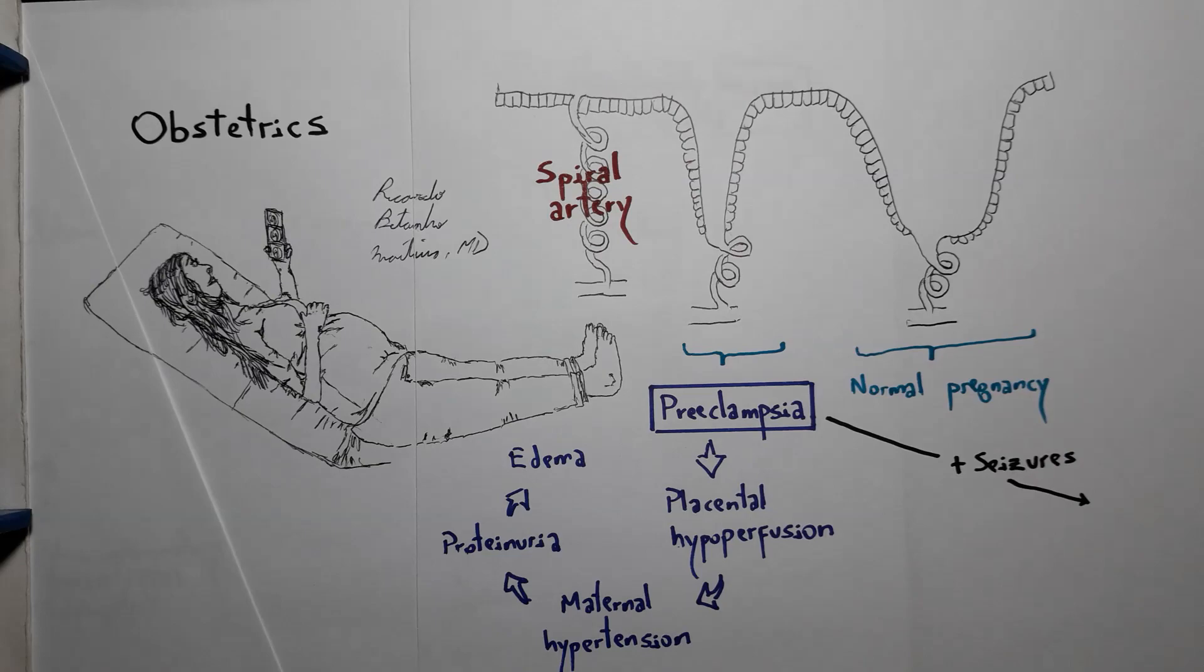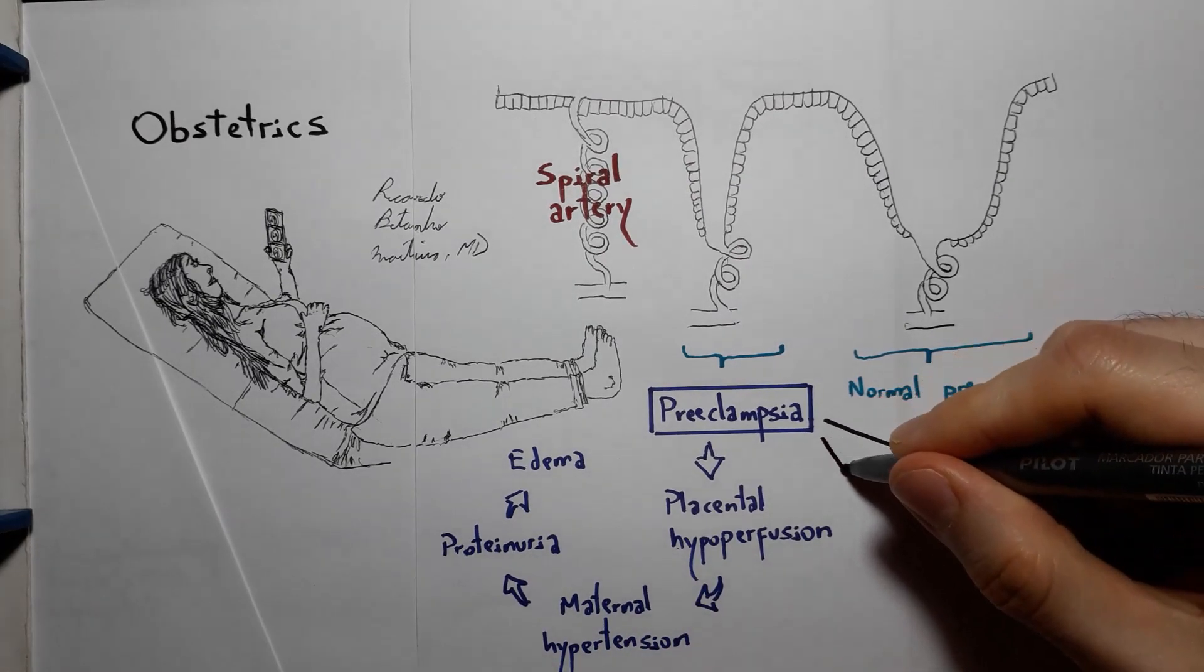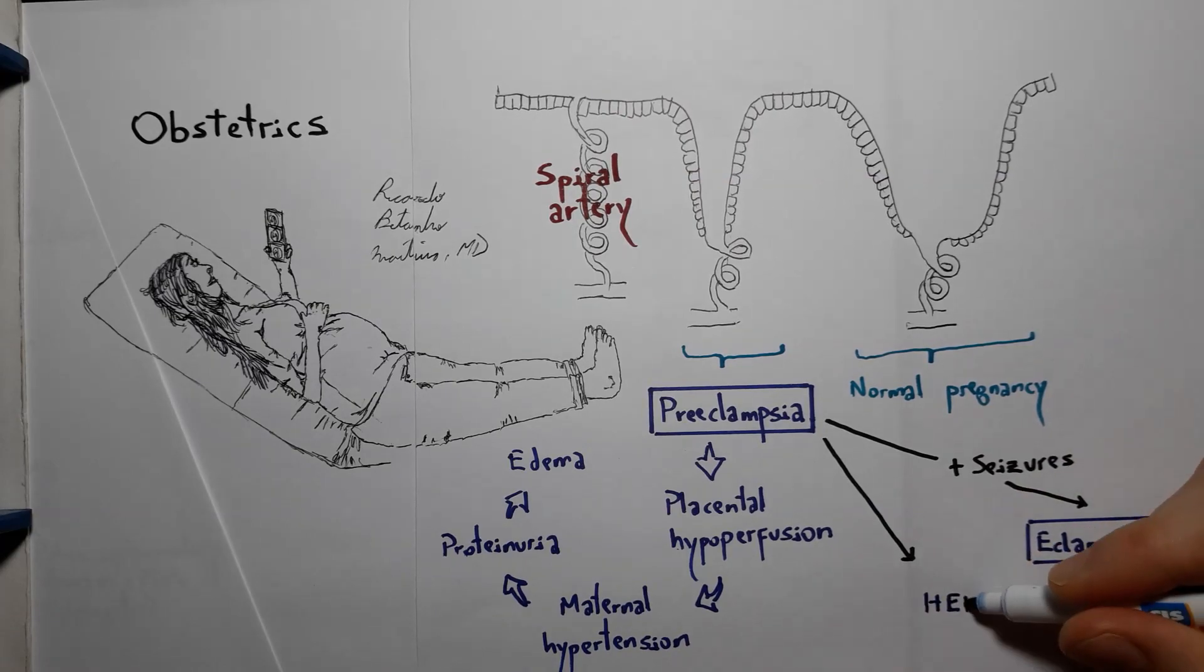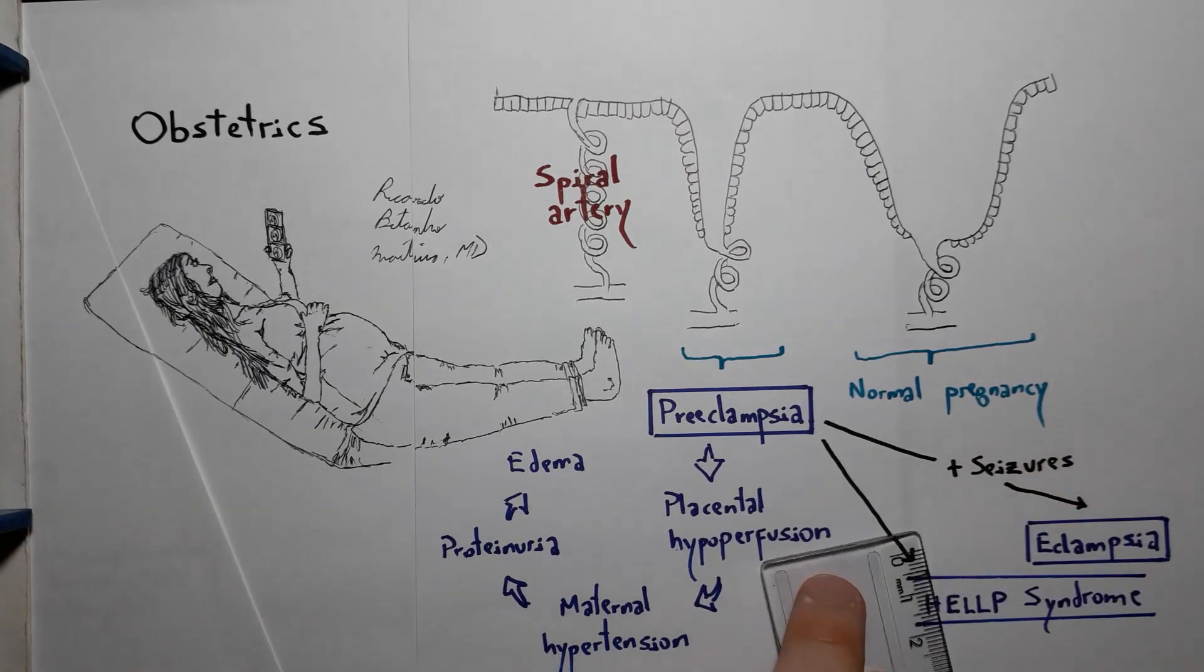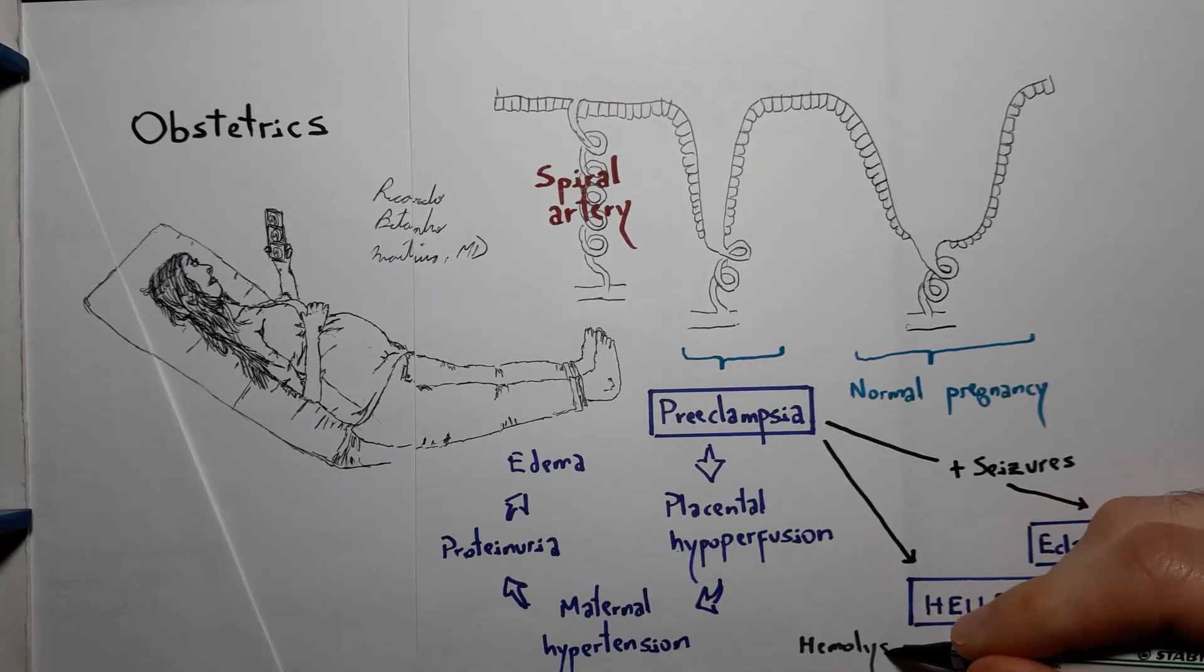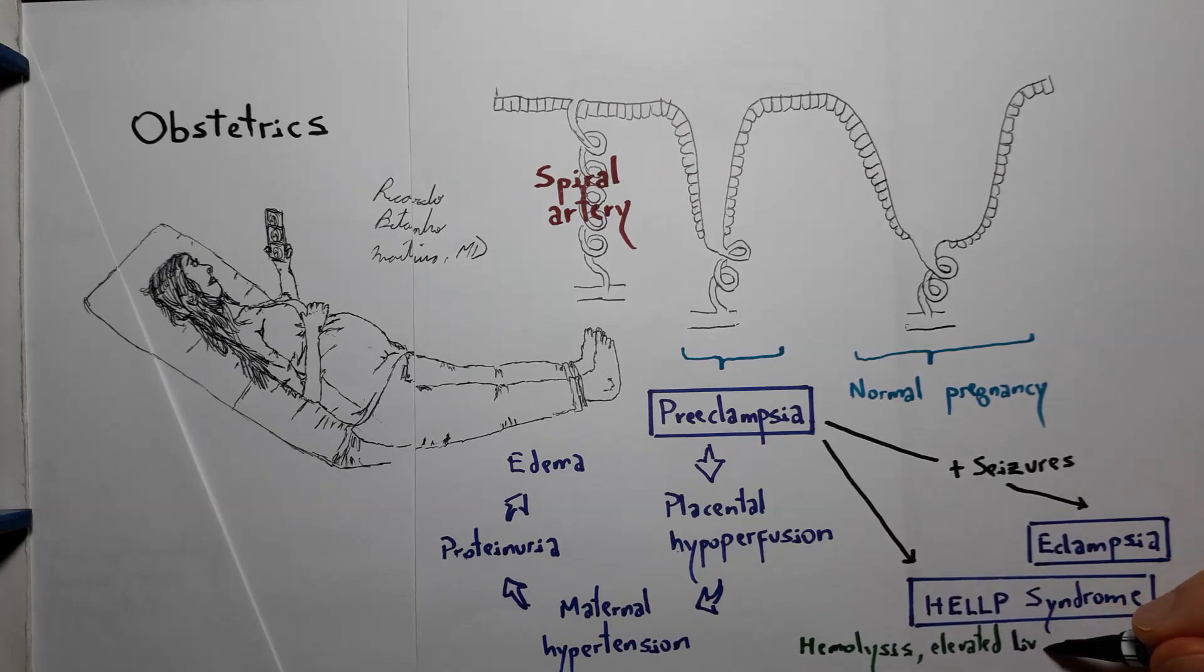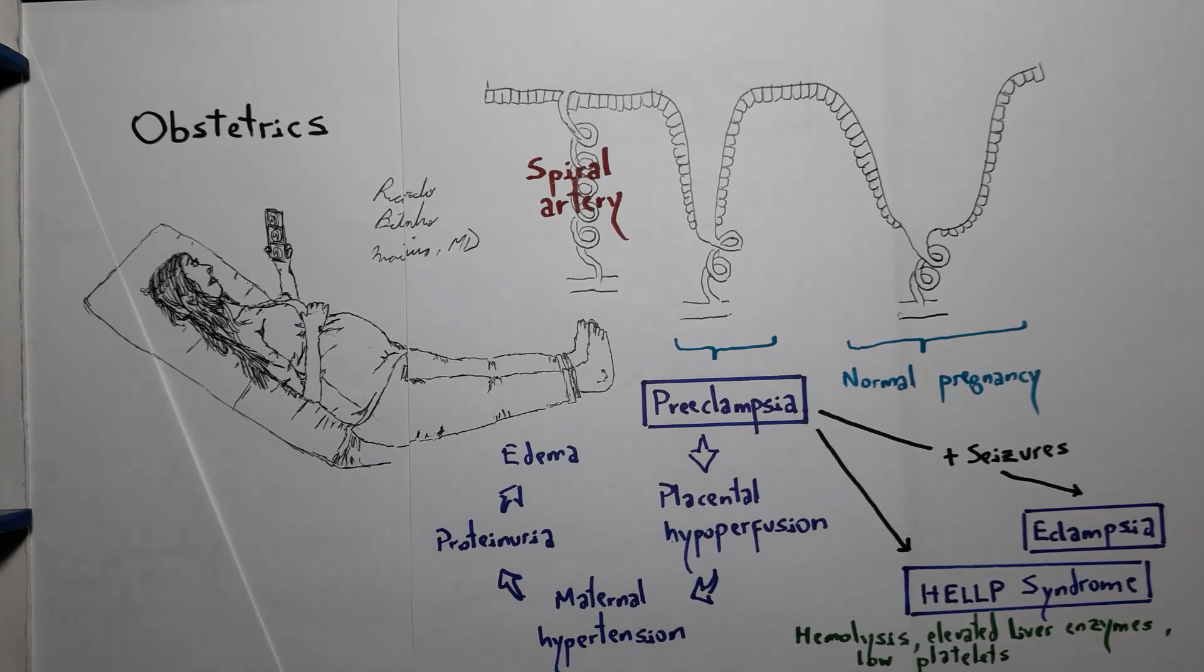When associated with seizures, it forms eclampsia, and in the presence of thrombotic microangiopathy of the liver, it can develop into HELLP syndrome, where the acronym describes the disease: hemolysis, elevated liver enzymes, and low platelets. Delivery is usually the optimal treatment and tends to resolve the condition.